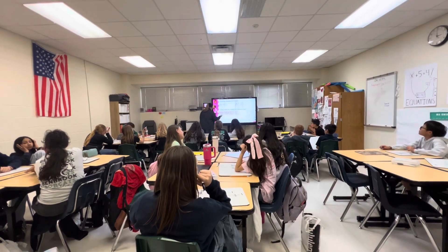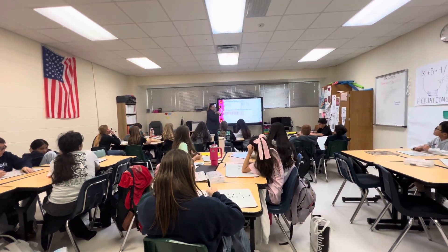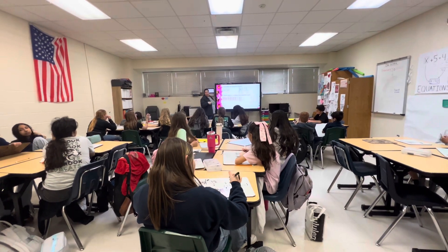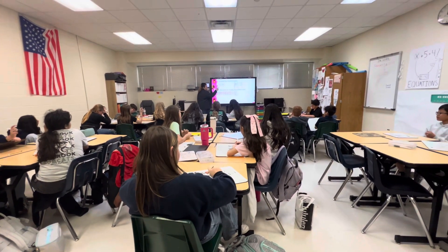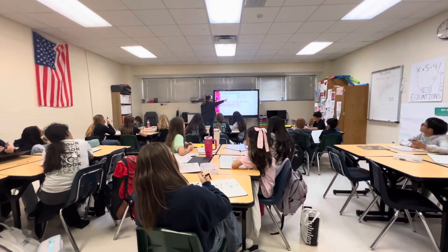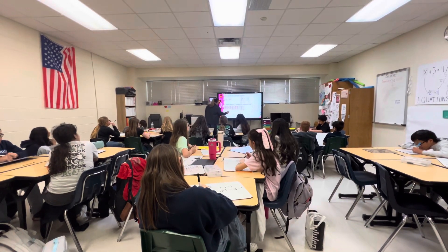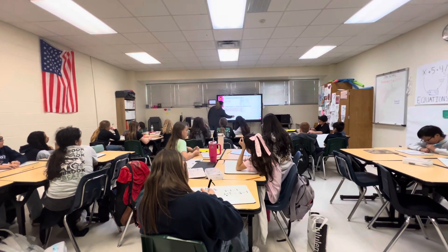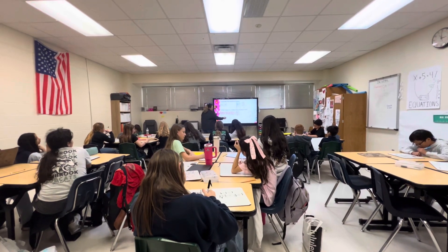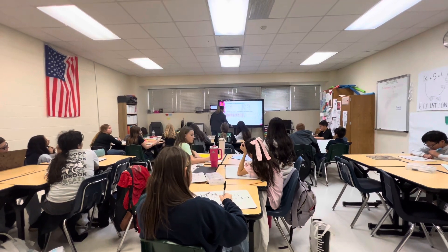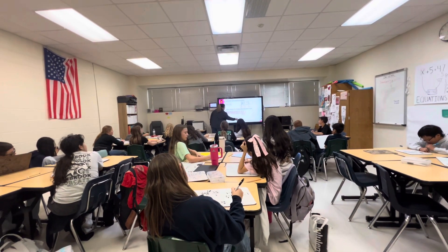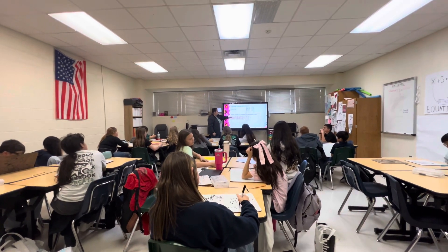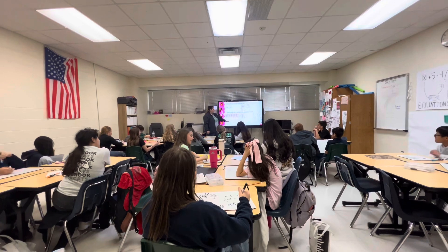Now we're going to do it the algorithm way. I need to turn three and two-thirds into an improper fraction. Before I can start working with fractions, if it's a mixed number I need to convert it. Three times three is nine; nine plus two is eleven — divide by one-third. That's really going to be eleven over three times three over one. What's eleven times three? Thirty-three. Three times one is three. What's thirty-three divided by three? Eleven.